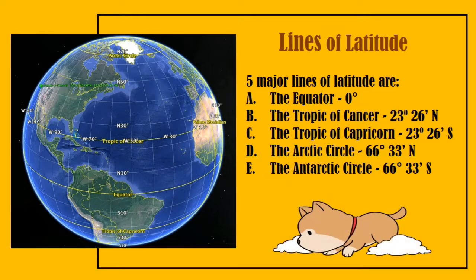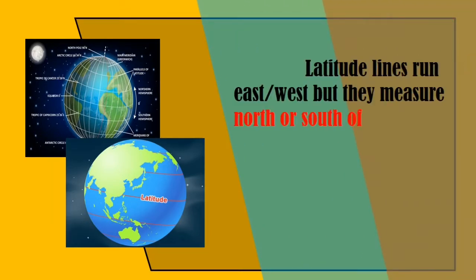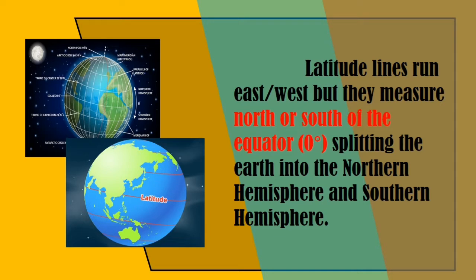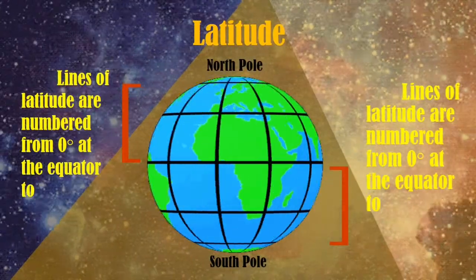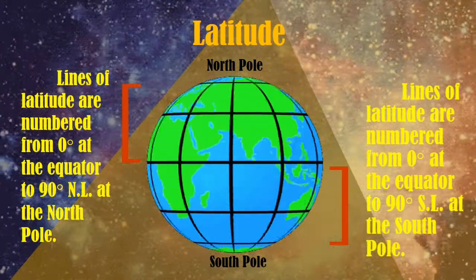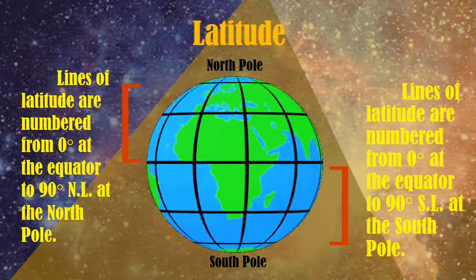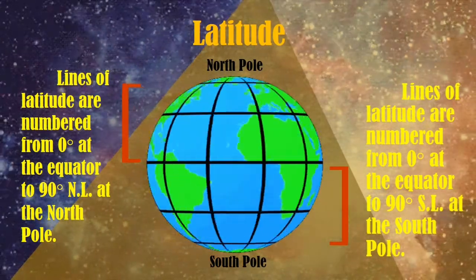The lines of latitude start at 0 degrees at the equator and end at 90 degrees at the north and south. There are five major lines of latitude: the equator, the Tropic of Cancer, the Tropic of Capricorn, the Arctic Circle, and the Antarctic Circle. Latitude lines run east or west but measure north or south of the equator at 0 degrees, splitting the earth into the northern hemisphere and southern hemisphere. As you can see on the slide, lines of latitude are numbered from 0 degrees at the equator to 90 degrees north latitude at the north pole.